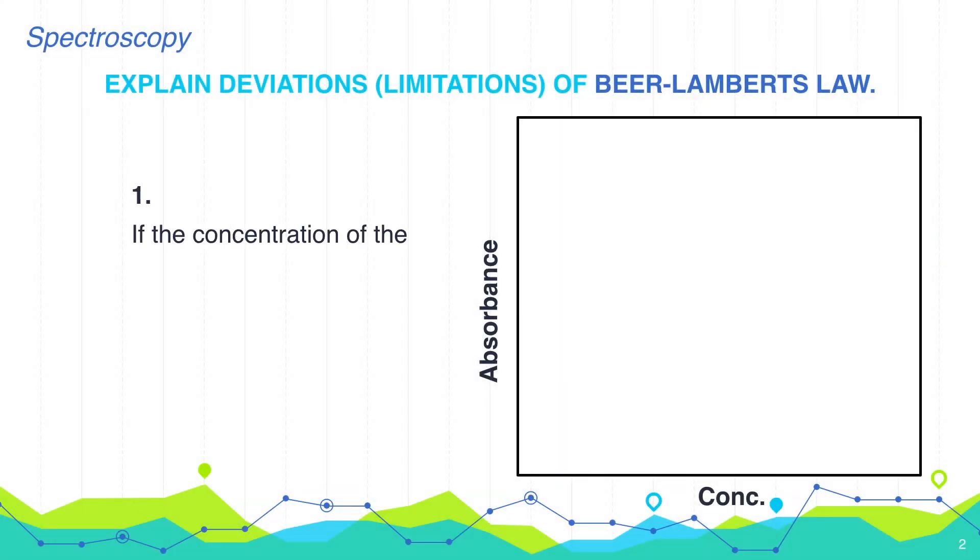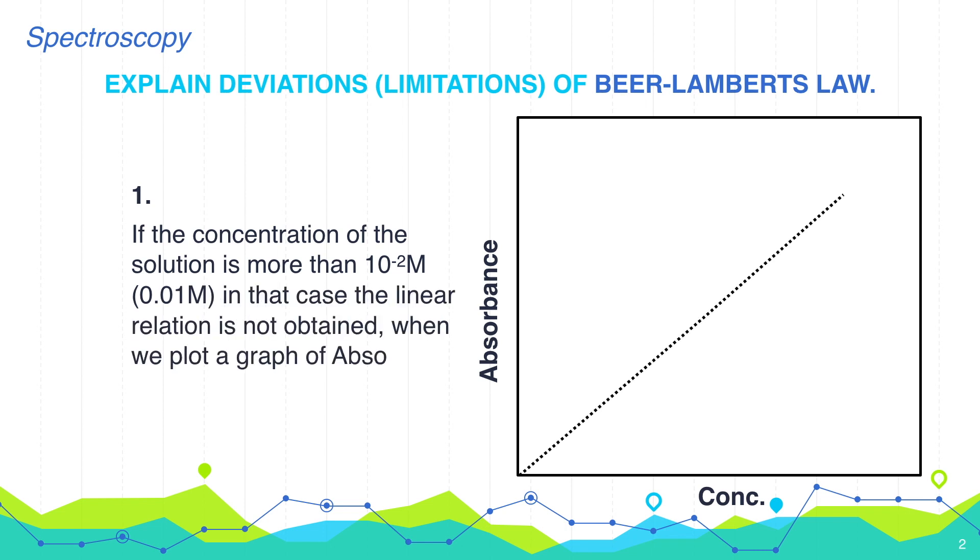First, if the concentration of solution is more than 10 to the power minus 2 molar or 0.01 molar, in that case the linear relation is not obtained. When we plot a graph of absorbance versus concentration, it shows linear relation only at lower concentrations. So if the concentration of solution is high, we cannot get the proper relation between absorption and concentration.